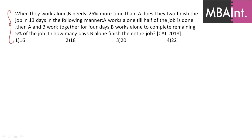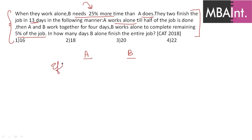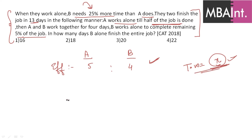The third question says: when working alone, B needs 25% more time than A. Together they complete the job in 13 days combined, but within that, A works half the time and B completes 20% of the job separately. Since B takes 25% more time, the efficiency ratio of A to B is 5:4.